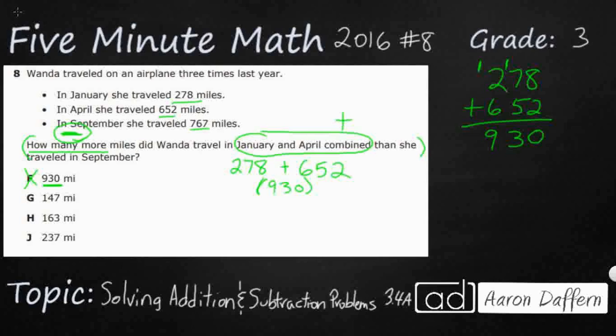The problem says how many more miles did Wanda travel in January and April combined? That's 930. Then she traveled in September. September is 767. So what we need to do is minus 767. You can think of that as 278 plus 652 minus 767, or we can just look at it like this: it's 930. So let me rewrite it right here.